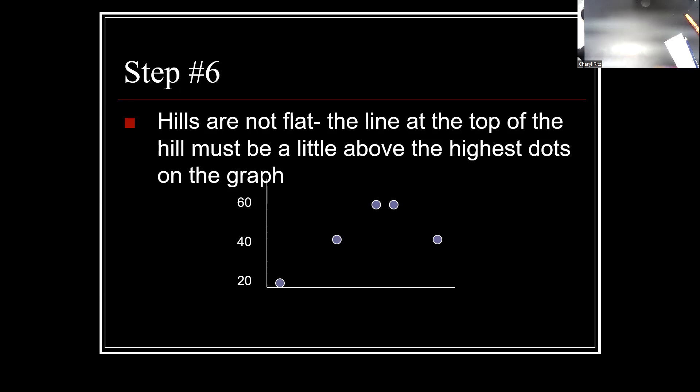Could be anything above 60, but below 80 inside this. So what am I getting at? Instead of just connecting those dots, would we make this a flat line here? When you get to the top, hills are not flat. Here's step six. Hills are not flat. The line at the top of the hill must be a loop above the highest dots on the graph. That's step six. So we have to be above the 60s, but not touching 80s. If you follow those six steps, you will be able to draw these no problem. So what we're going to do now, again, page 31 is the exact same map we were looking at. We're going to walk through the steps and actually draw ourselves a profile.